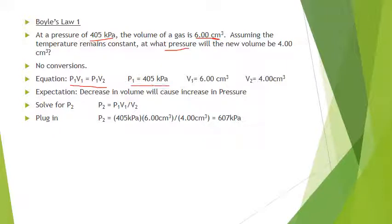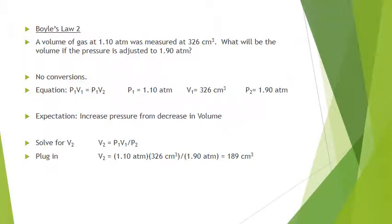P1 is 405 kPa, V1 is six centimeters cubed, and V2 is four centimeters cubed. Rearrange the equation to solve for P2 — I like doing the algebra first, then plugging the numbers in. The centimeters cubed cancel out, and the math confirms the pressure goes up, exactly as expected. That's Boyle's Law problem one.